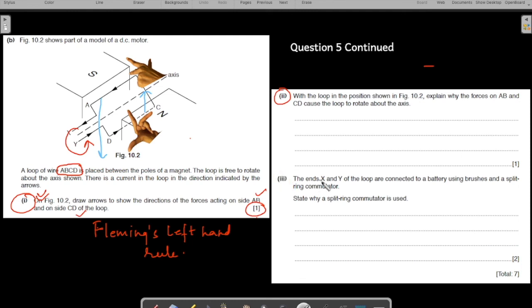The last part. The ends X and Y of the loop are connected to a battery using brushes and a split ring commutator. So, state-wise the split ring commutator is used. So, here you use a split ring. Go through the theory on motors. You will understand the reasoning behind it. Split rings are used so that the current is reversed every half a cycle. That's one point. That's one point, you can say. Another point.